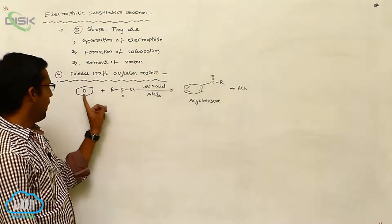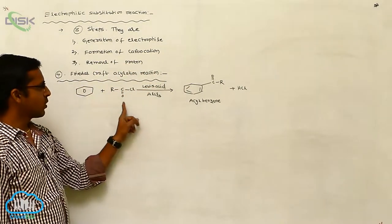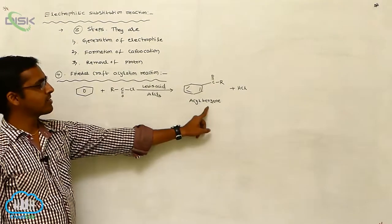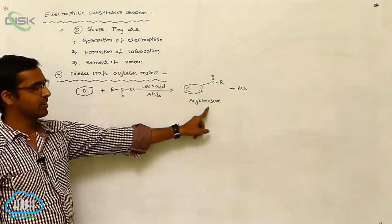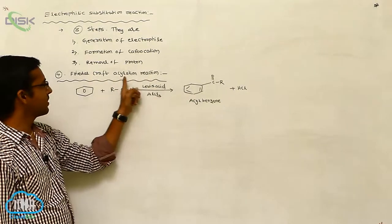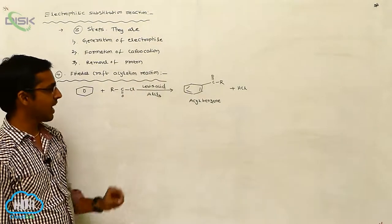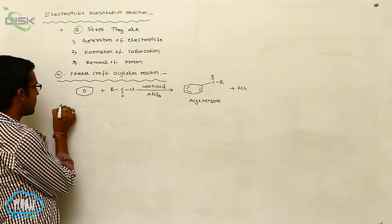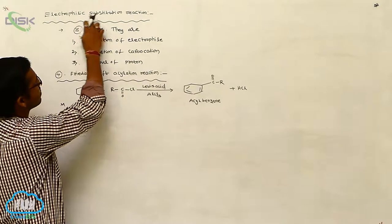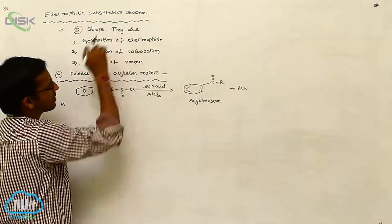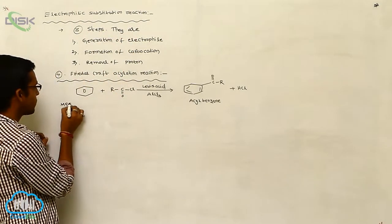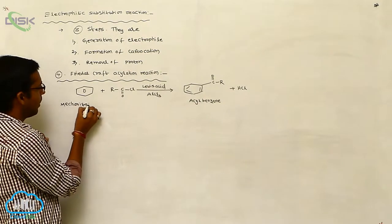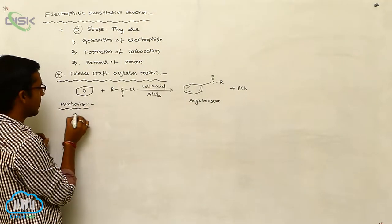Benzene is reacted with acid chloride in the presence of Lewis acid to produce acyl benzene. This is called Friedel-Crafts Acylation Reaction, which is an example of an Electrophilic Substitution Reaction. Now let's see the mechanism for Friedel-Crafts Acylation Reaction.